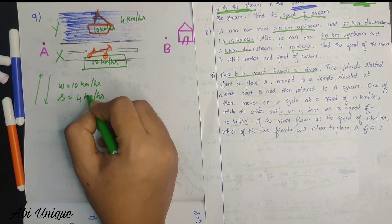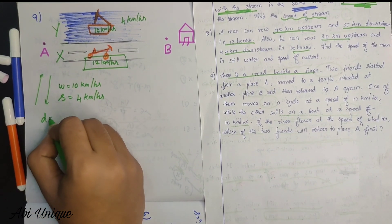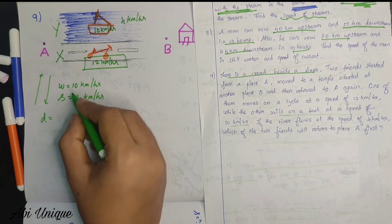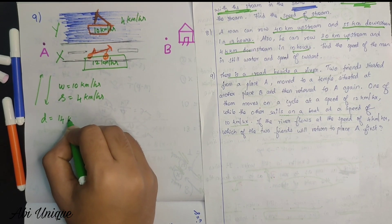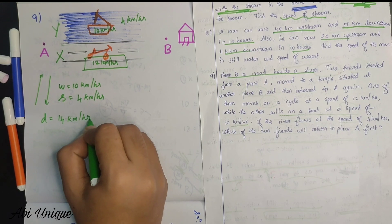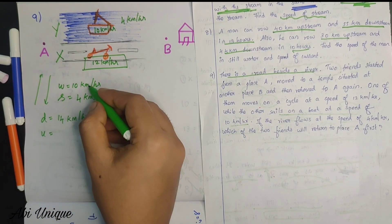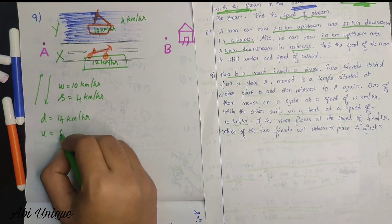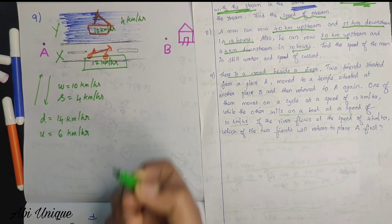So if we know these two values, we can find downstream and upstream speeds directly. Downstream speed equals 10 plus 4, which is 14 km per hour. Then upstream speed using the formula we subtract: 10 minus 4 equals 6 km per hour.